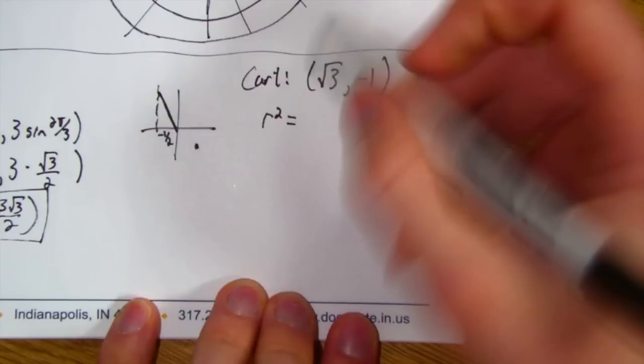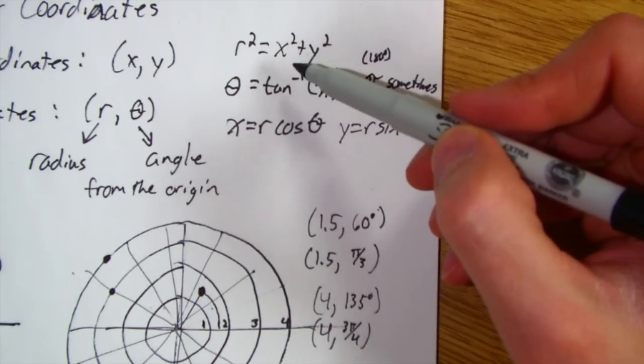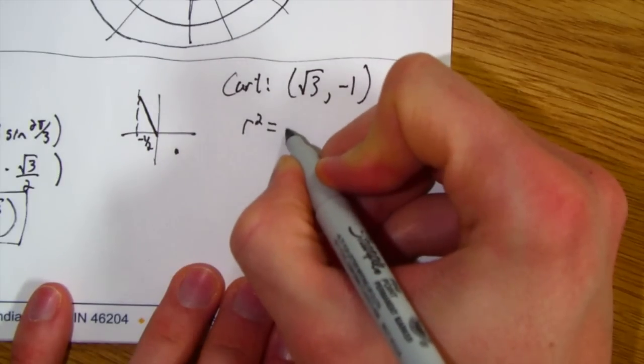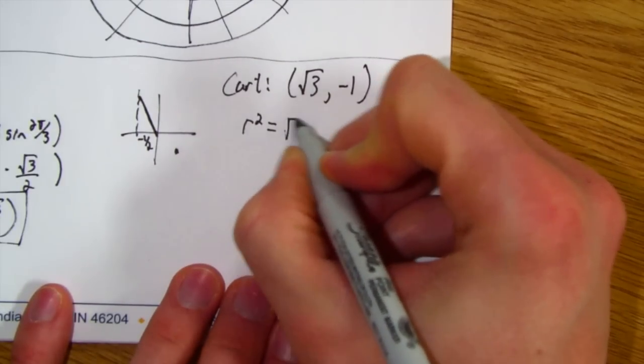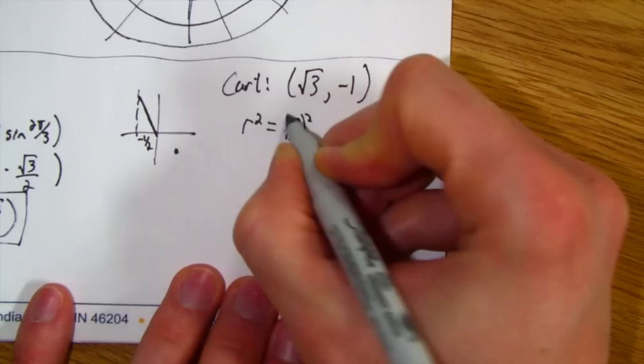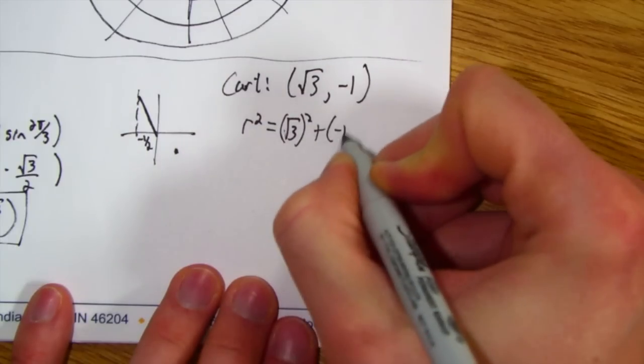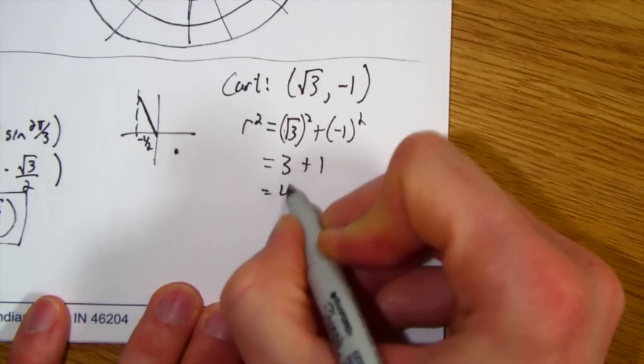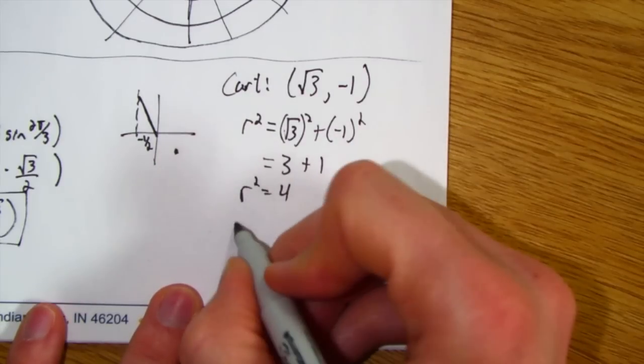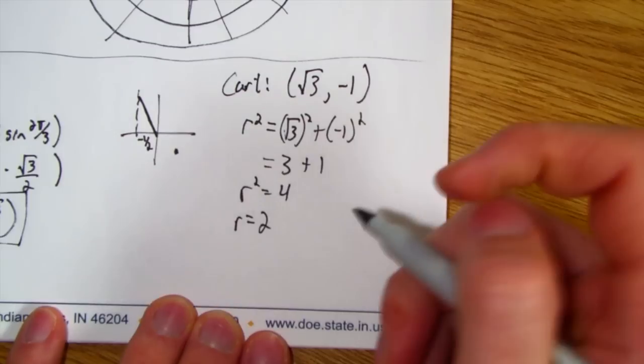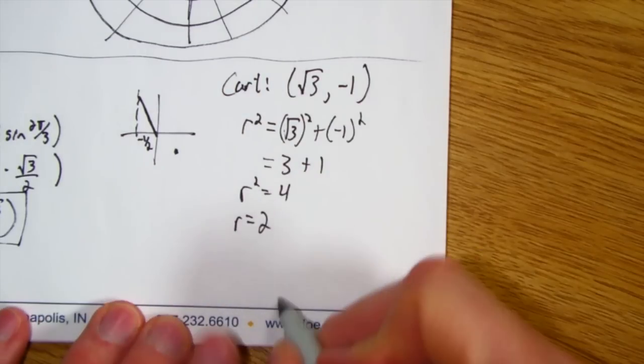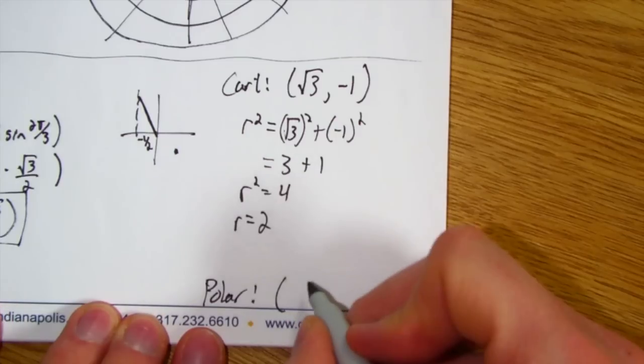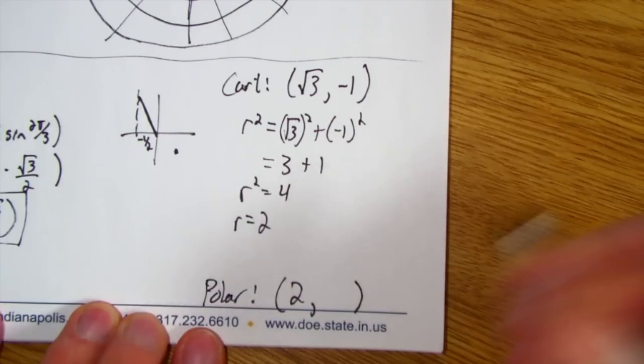So we need to find r and we need to find θ. We know that r squared, from our formula up here, we know that r squared is x squared plus y squared. So √3 squared plus negative 1 squared. So this is going to be 3 plus 1, which is 4. That means r is 2. So when I go to write my polar coordinates, I know that my radius is going to be 2. So 2 comma something.